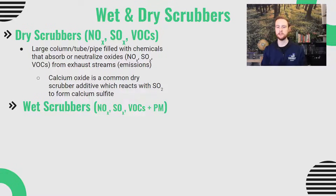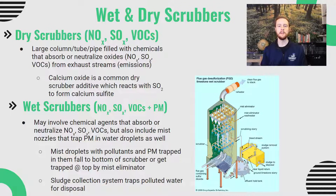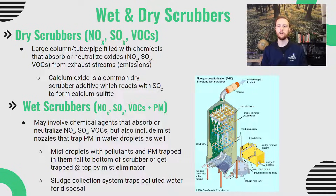A wet scrubber works similarly and also reduces NOx, SOx, and VOCs, but is more effective at trapping particulate matter. It features a misting apparatus that releases mist droplets at different levels of the scrubber. These droplets grab onto particulate matter — which often has air pollutants attached to it — and either fall to the bottom or are captured by a mist eliminator at the top. The collected material forms a sludge that is concentrated in a collection tank at the bottom and can then be taken to a landfill.